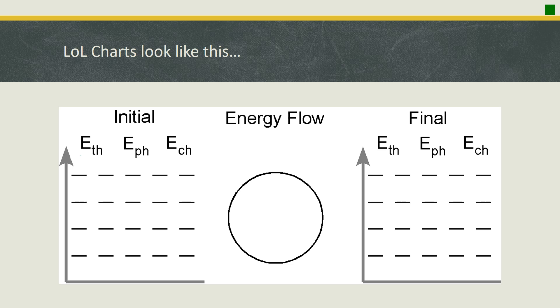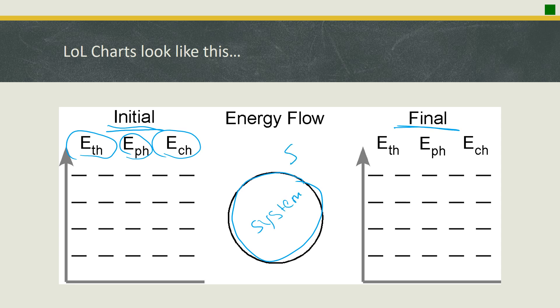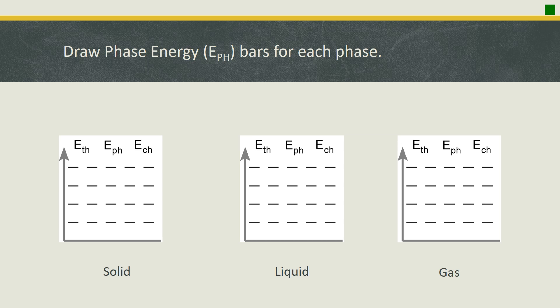This is what an LOL diagram looks like: ETH (thermal energy), EPH (phase energy), and ECH (chemical energy) are shown for the initial and final states, with an energy flow section accounting for whether energy entered or left the system. This is the key to identifying whether a reaction is exothermic or endothermic. For phase energy bars, the amounts are specific: a solid has one bar, a liquid has two bars, and a gas has four bars. So going from a solid to a liquid, you should see one bar going to two bars.